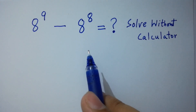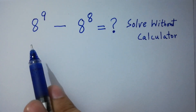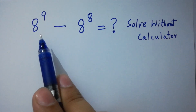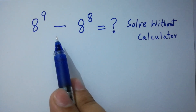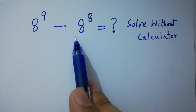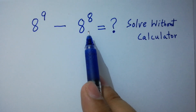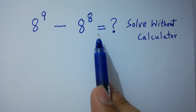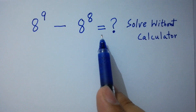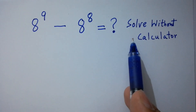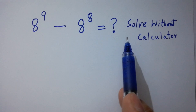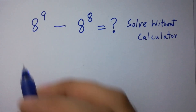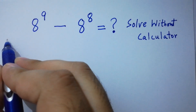Hello friends. 8 to the power 9 minus 8 to the power 8 equals what? Solve without calculator. Let's have a solution.